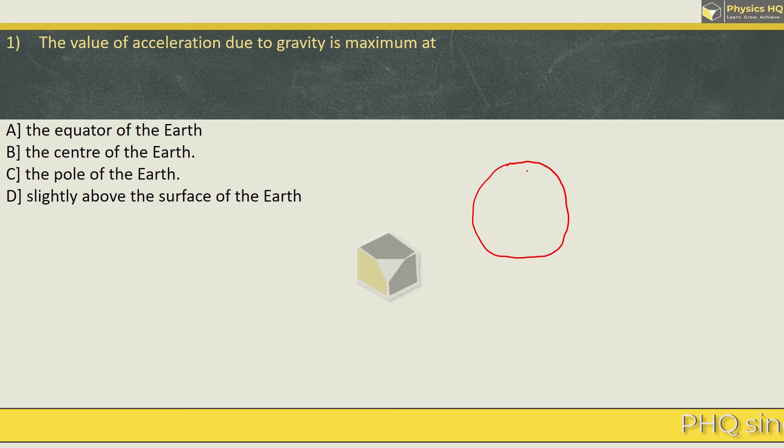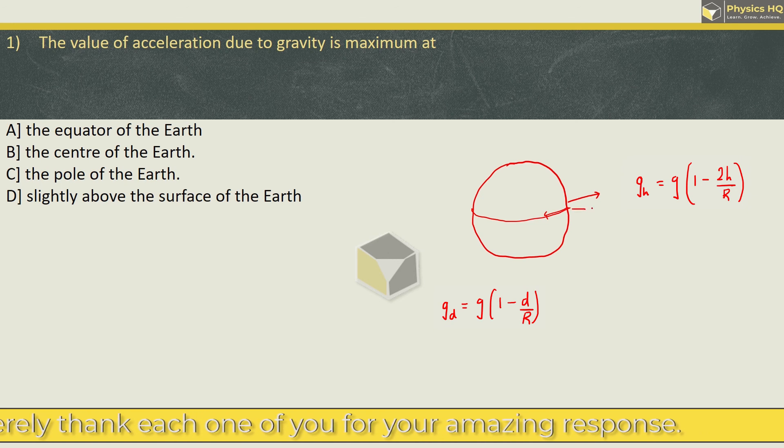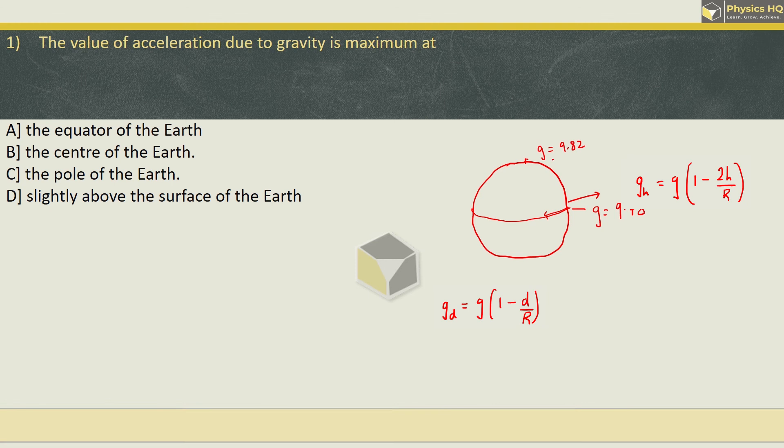The value of g goes on decreasing even if you go above the surface of the Earth and even if you go below the surface of the Earth. It is maximum on the surface of the Earth and that too on the surface of the Earth. The value of g is approximately 9.78 meter per second square at the equator and at poles g value is approximately 9.82 meter per second square. So the value of g is maximum at the poles.